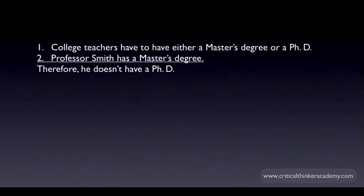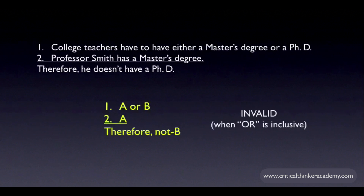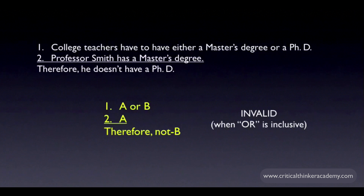The general form of this invalid inference looks like this. In this form, you're stating that one of the disjuncts is true, and on the basis of this, inferring that the remaining disjunct must be false. In general, this is not a valid inference when it's logically possible for the two disjuncts to be true at the same time. In other words, it's invalid when the OR is an inclusive OR.